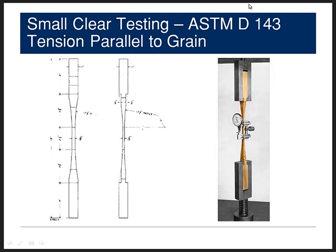Another test is the shear parallel to the grain test — it is a very seldom used test. The sample is a 2 inch by 2 inch by 2.5 inch block with a little notch cut out of the top so that you can fail the sample in shear parallel to the grain. We have also performed the tension parallel to the grain test, though not very frequently. That is a highly machined sample, 1 inch by 1 inch by 18 inches long, machined down to only a 3/8 by 3/16 inch cross section at the midpoint.